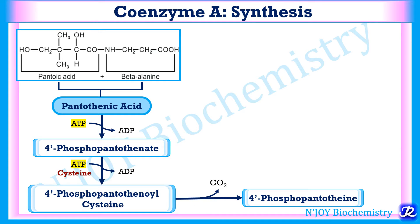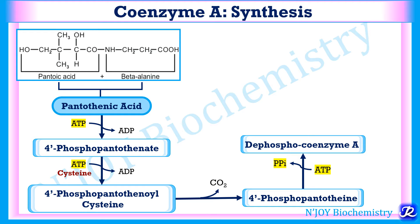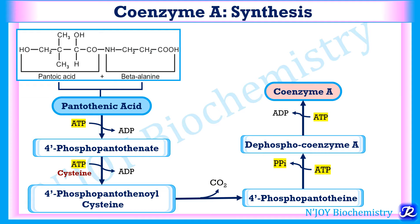Next there is a decarboxylation reaction where 4'-phosphopantothenoyl cysteine is decarboxylated by the enzyme phosphopantothenoyl cysteine decarboxylase. In the following reaction, ATP is utilized and pyrophosphate is released, so two high energy bonds are needed, with formation of D-phosphocoenzyme A. In the last reaction, coenzyme A is formed from D-phosphocoenzyme A by the enzyme D-phosphocoenzyme A kinase.